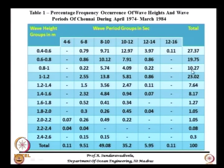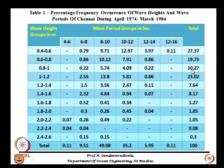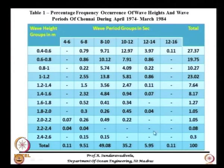If you look at the totals, up to 1.6 meters — cumulating 15, 38, 48, 75, 95 — 95 percent of the waves are less than 1.6 meters. The wave period maximum is between 8 to 10 seconds at 49 percent.